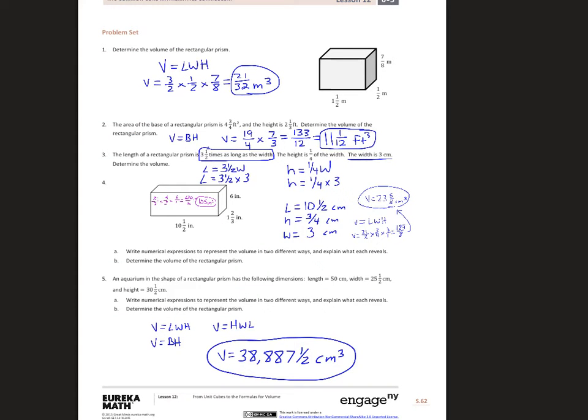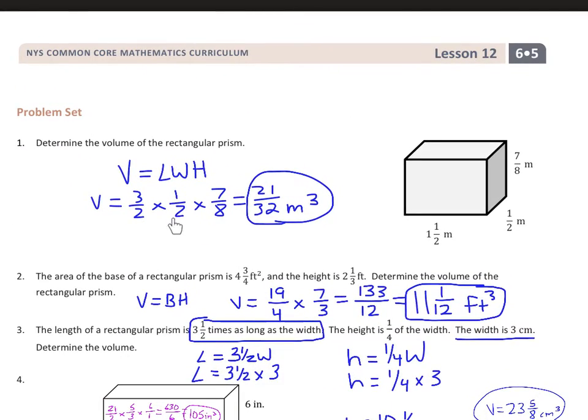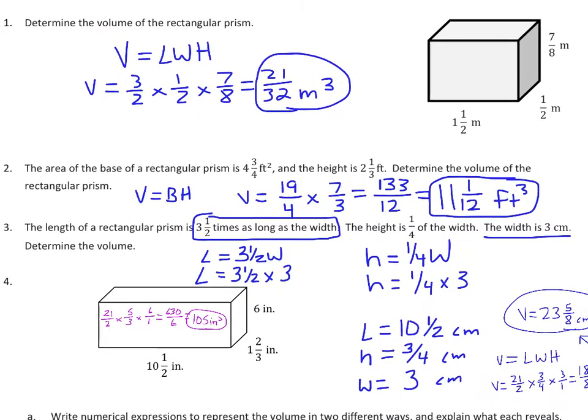Let's go over the answers for the problem set. Number one: classic length times width times height formula. When we multiply those, we get 21 over 32 meters cubed, making sure we put our units cubed since we are multiplying them by themselves three times. Number two: we're using base times height. You can see that the base was given to us, and so that's 19 fourths. One key skill is transferring mixed numbers into improper fractions so you can multiply easily, which I have a video on if you want to go back and look at that. That ends up being 133 over 12, and when you divide those to make it back to a mixed number, it's 11 and 1/12 cubic feet.